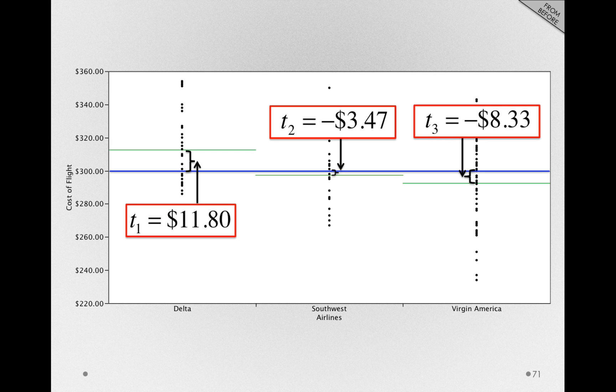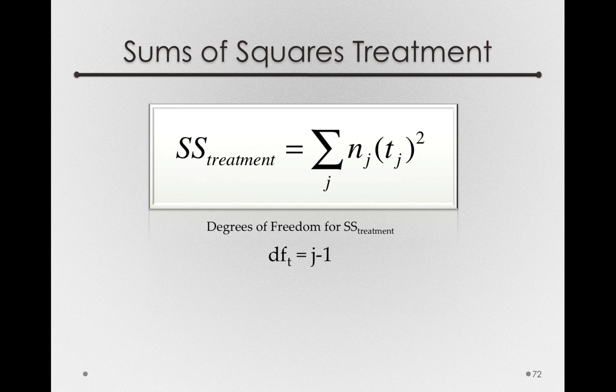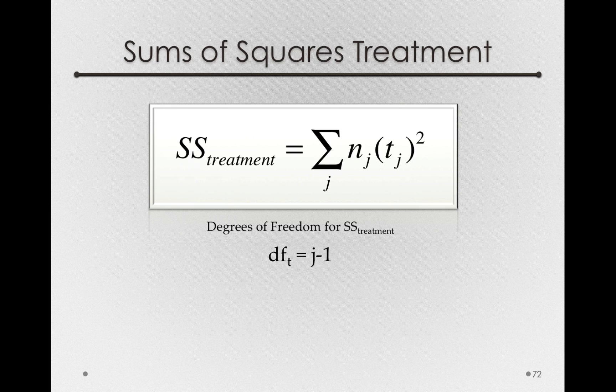So degrees of freedom is simply a representation of how many of these points, or how many of these values are independent. You only need to know two, and you can calculate the third. So there is, for any sums of squares treatment, j-1 degrees of freedom.